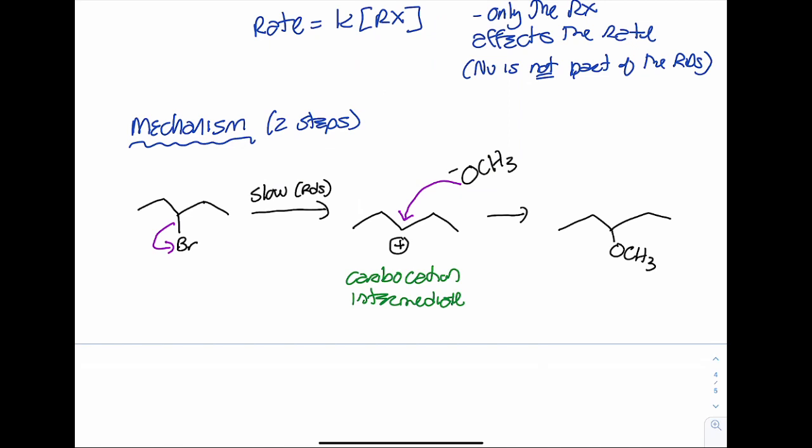I don't need you to draw the transition states for SN1. For SN2 mechanisms I do ask for them, but not here. If you were to draw them: for my rate determining step, I would have that bond between my partial positive carbon and my leaving group dotted because I'm breaking that bond. For the second mechanistic step, I would have a dotted line between that carbocation carbon and my nucleophile because I'm partially forming that bond. You don't need to draw them, but if you do, draw them correctly. For SN2, you do need to draw the transition state for full credit.